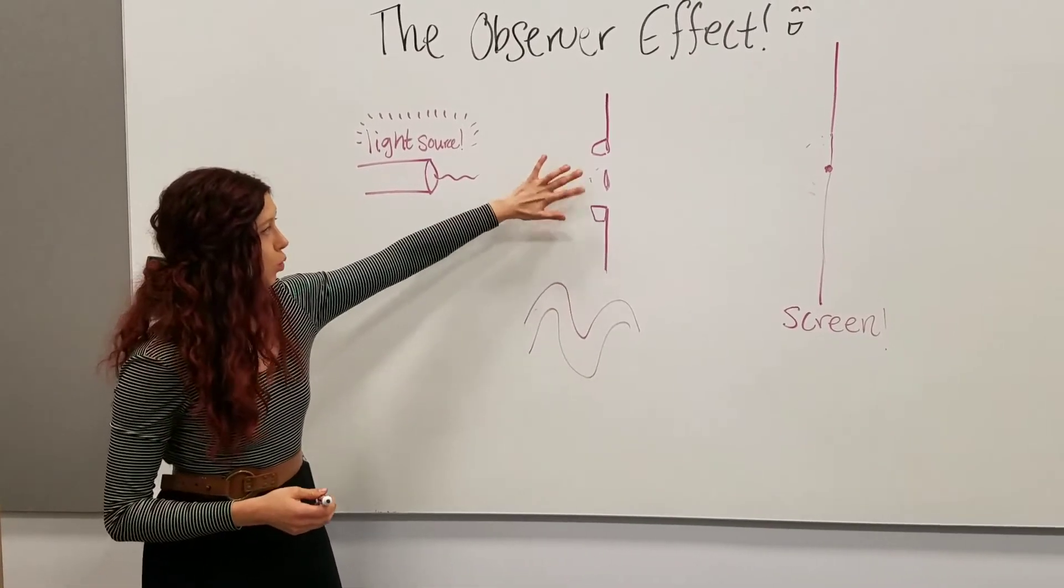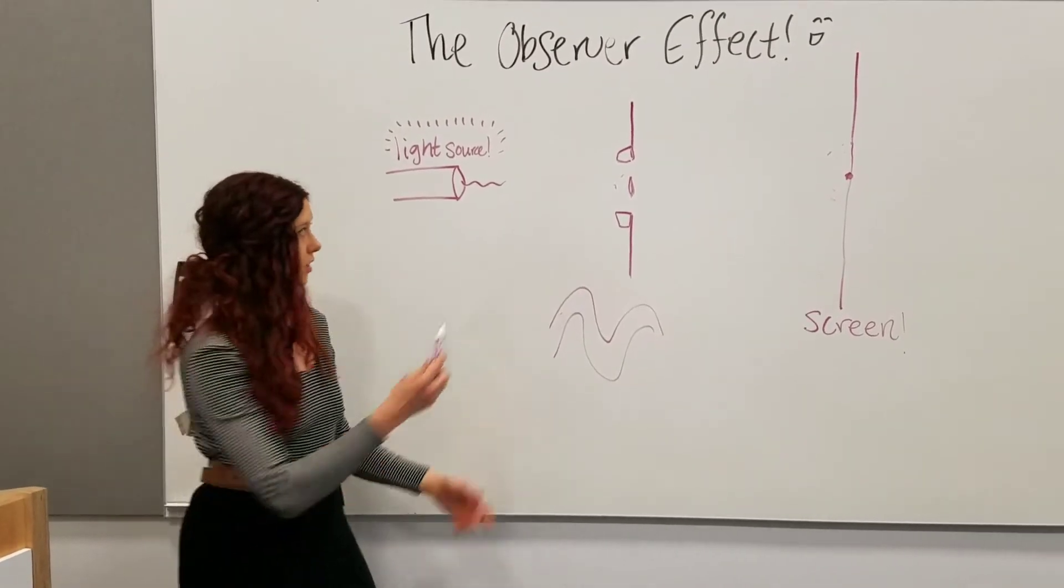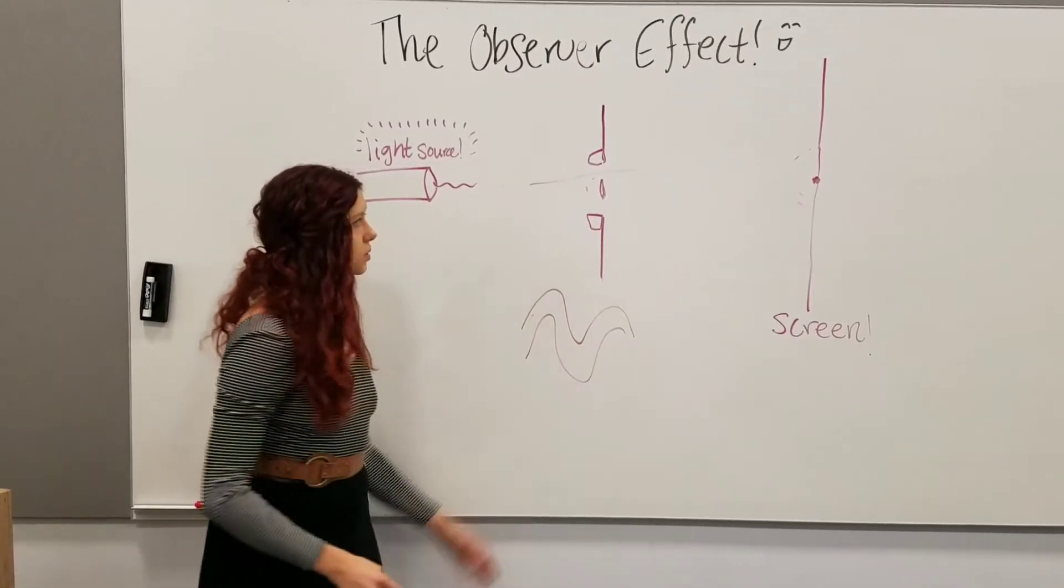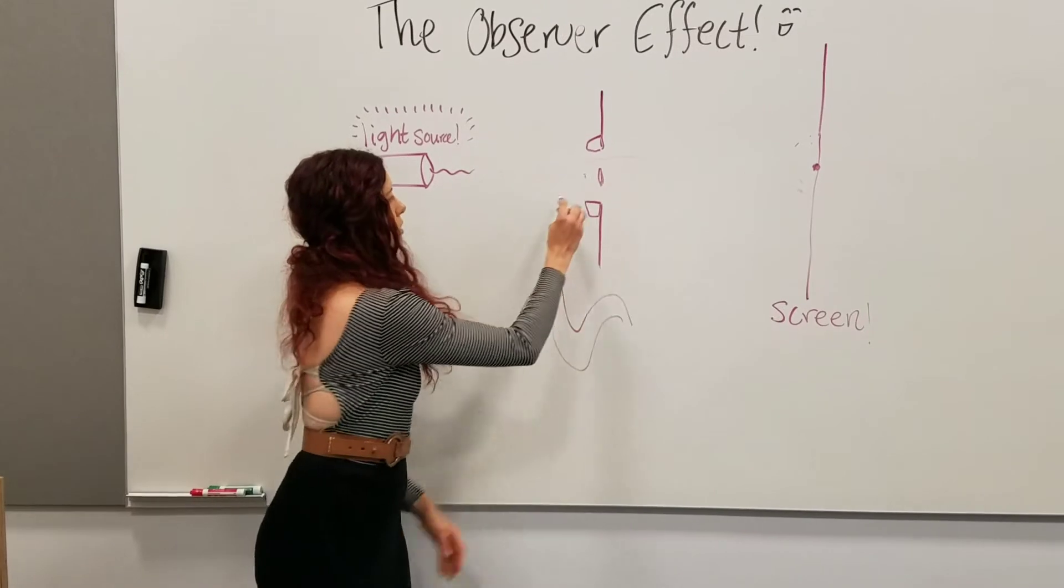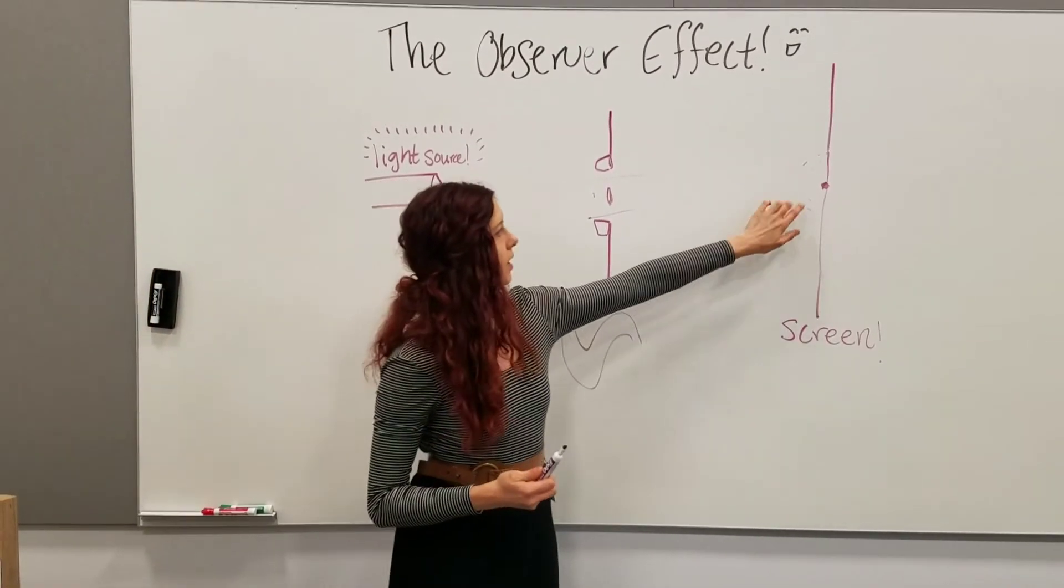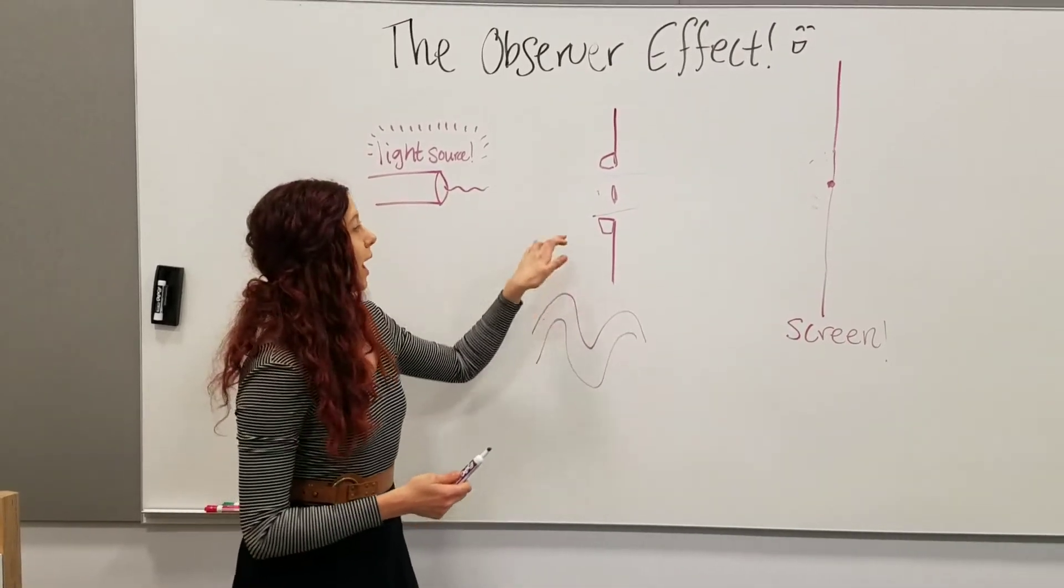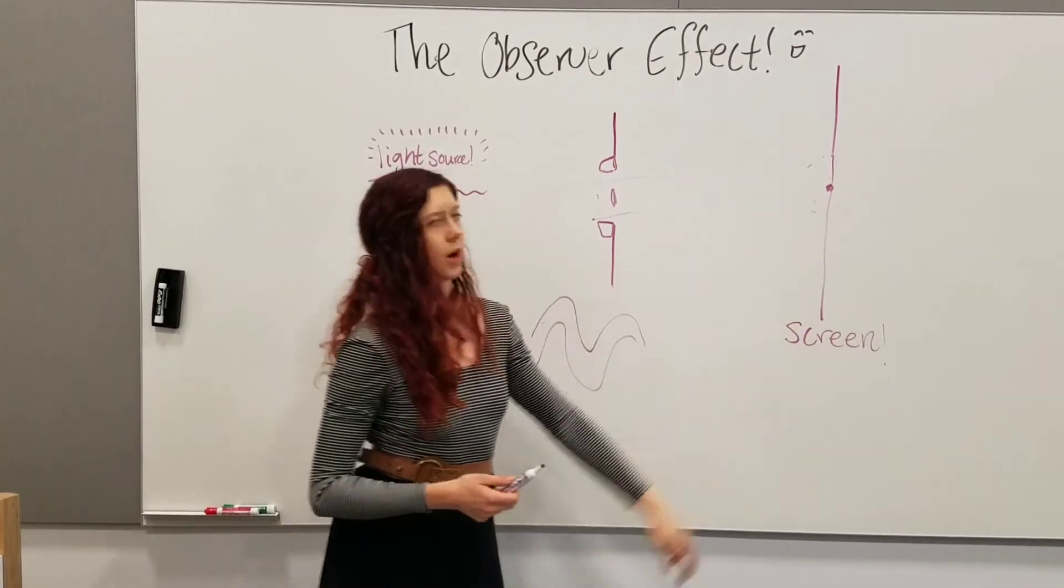And what's super weird is that you can't know where the photon is going. What the detectors show you is that they all either go through this one and you get a spot, or they all either go through that one and you get a spot. But the crucial point is that when you have no detectors, you have an interference pattern. When you have detectors, you get a bright spot.